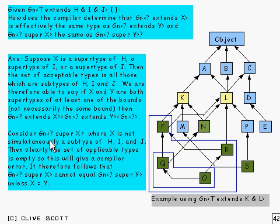OK, now consider the next case: Gn of something which is super X, where X is not simultaneously a subtype of H, I and J. And you can work that out, of course, by going from X up to object through all possible paths. And if you don't meet every single one of these on some path or another, then it's not simultaneously a subtype of all of them.